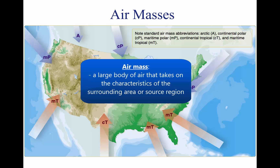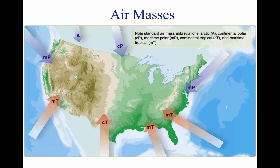Air masses are classified according to the regions where they originate. They are large bodies of air that take on the characteristics of the surrounding area, or source region. A source region is typically an area in which the air remains relatively stagnant for a period of days or longer. During this time of stagnation, the air mass takes on the temperature and moisture characteristics of the source region. Areas of stagnation can be found in the polar regions, tropical oceans, and dry deserts.